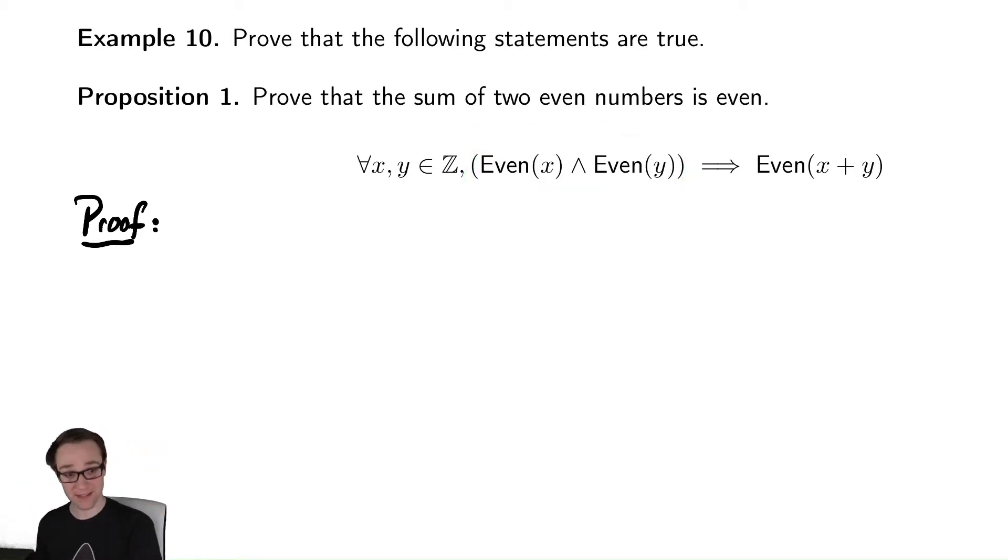Suppose that x is even and y is even. Then we need to use whatever knowledge we have available to show that x plus y is even. So how can we do this? I'm going to write down: let x and y be even numbers. Just like I said, I'm going to assume that is true.